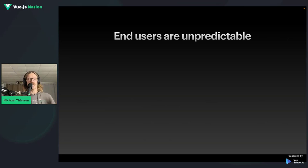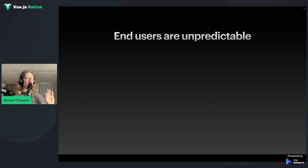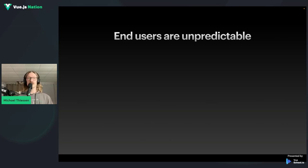The reason for error handling is that end users are unpredictable. When we're developing apps, we tend to drill the same happy path over and over — clicking a button, seeing it work, fixing it, clicking it again. We know exactly how the app works because we wrote the code. We know every feature and exactly how it's supposed to behave.